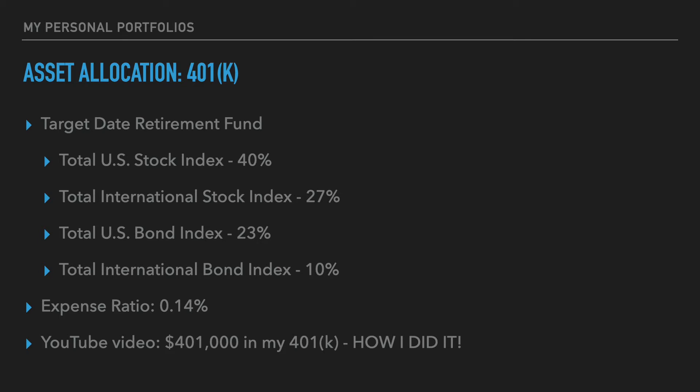If you'd like to learn more about my experience investing in my 401k and how I went from having a zero balance to over $401,000 over a 12-year period, then please be sure to view my video, '$401,000 in my 401k: How I did it' — I'll put a link in the description section below. The asset allocation of this fund is set by the asset manager, and it becomes more conservative over time as they get closer to the retirement date associated with the target date retirement fund. This makes for a very easy and simplified approach to investment management.